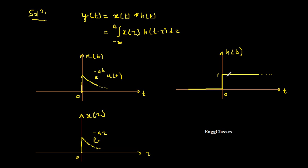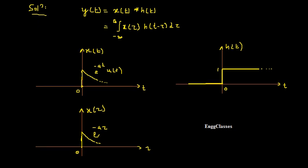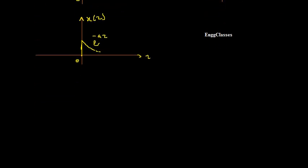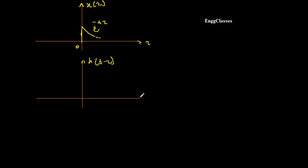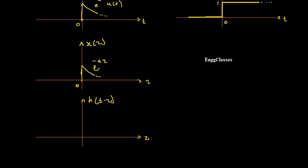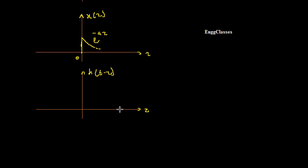Next, I need to sketch h(t−τ). Starting from h(τ) (replacing t with τ), I then get h(t−τ) by drawing the reflected version of h(τ) — take the mirror along the vertical axis. The reflected unit step extends from t towards minus infinity, and the point where τ = 0 is relabeled as τ = t.